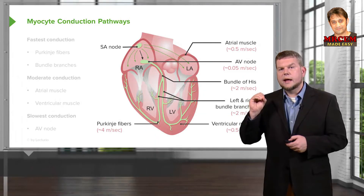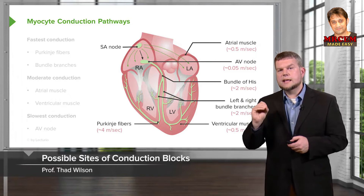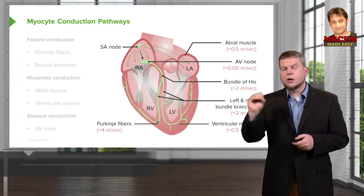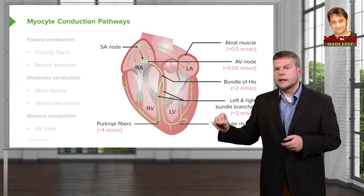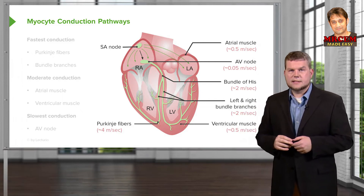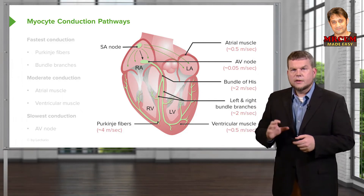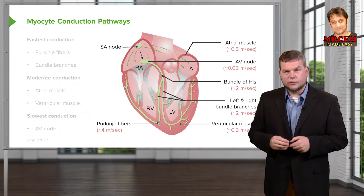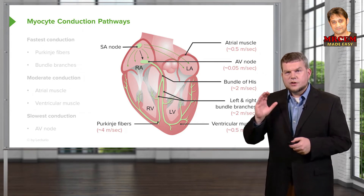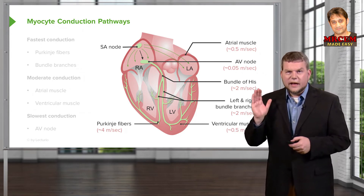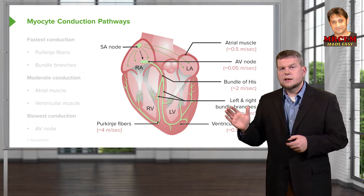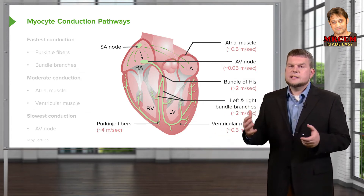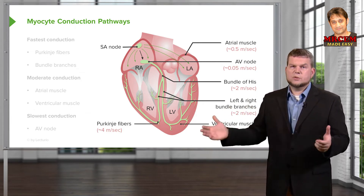Let's talk through how you get a signal from the SA node all the way down to the cardiac myocytes. There are some specific pathways by which you're going to go through. You start at the SA node, you go to the AV node, you go down the Purkinje fibers, and that is how this process works.